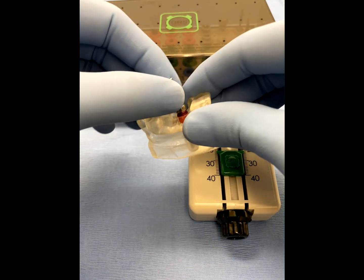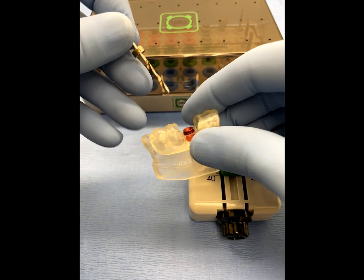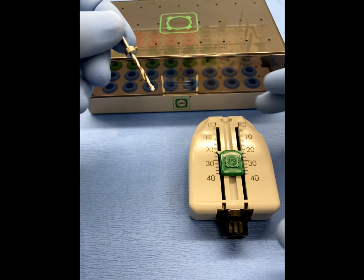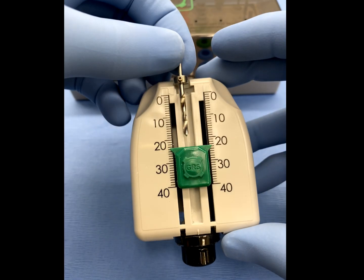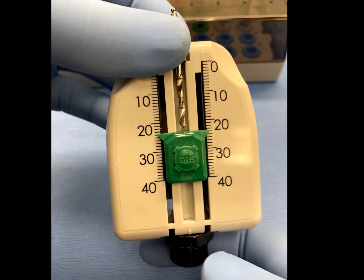Now, remove the drill with the affixed drill stop from the GRS surgical guide and model, and place the drill into the GRS depth gauge with the drill stop secured within the drill stop channel.